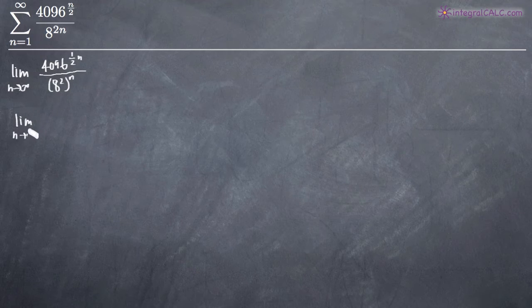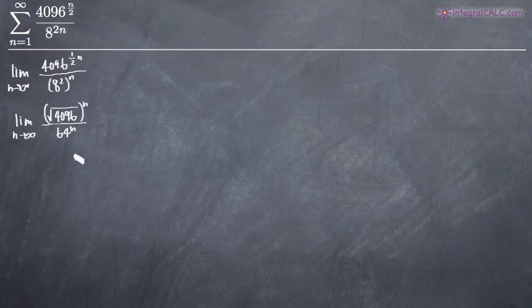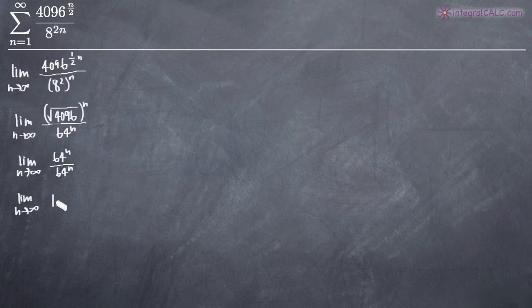In the numerator, we now have 4096 to the 1/2. Remember that anything raised to the 1/2 is the same as the square root. So we essentially have the square root of 4096, raised to the n power. In the denominator, 8 squared is 64, so we have 64 raised to the n power. The square root of 4096 turns out to be 64, so the numerator is also 64 to the n power. This fraction simplifies to 1.